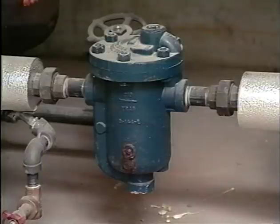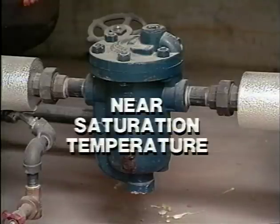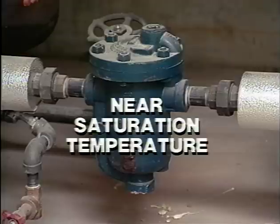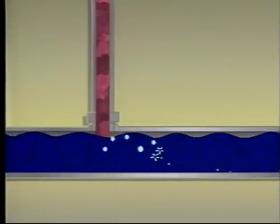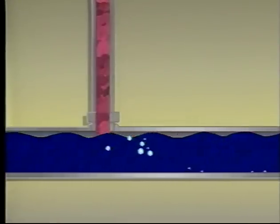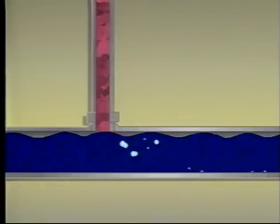The condensate being discharged from the steam trap is at nearly steam temperature when it passes through the trap orifice. When the trap discharge enters the low-pressure condensate line, a great deal of it flashes back into steam.